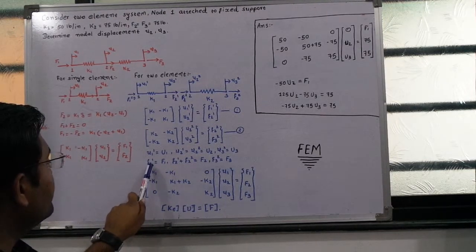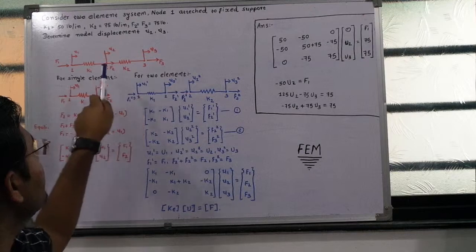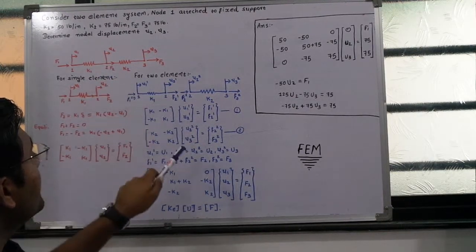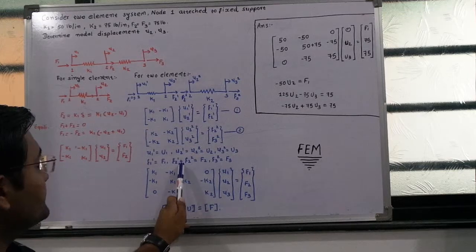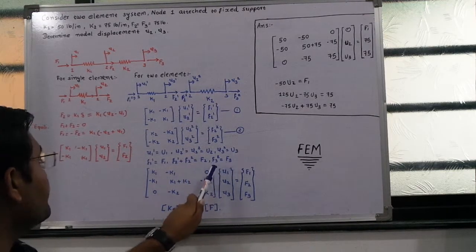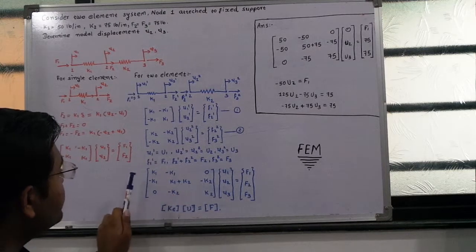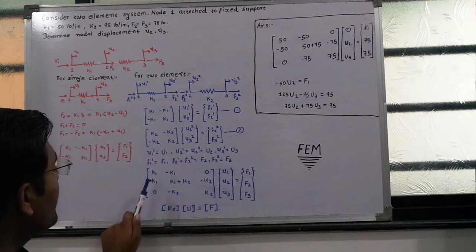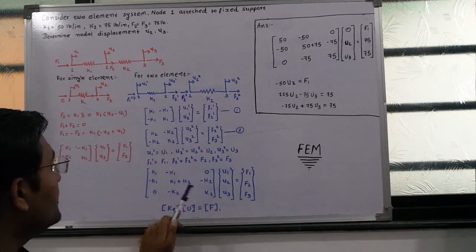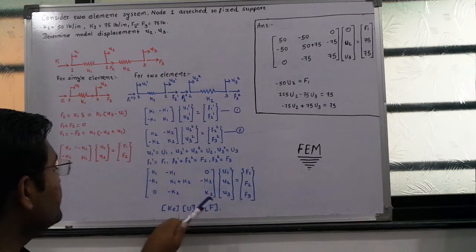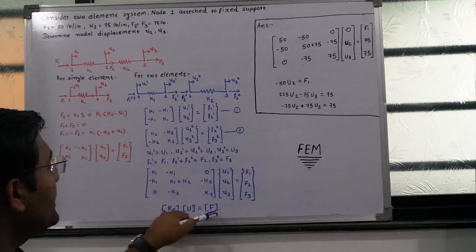Assembling a single global matrix from the two element equations gives the 3×3 global stiffness matrix: [K1, -K1, 0; -K1, K1+K2, -K2; 0, -K2, K2] times [U1; U2; U3] equals [F1; F2; F3]. This is the assembled element stiffness matrix, with U as the nodal displacement matrix and F as the force matrix.